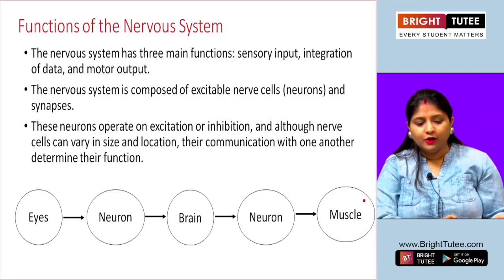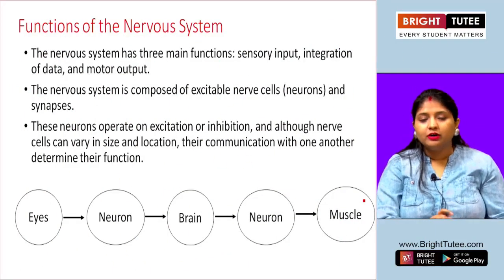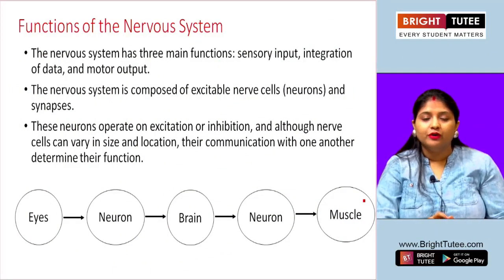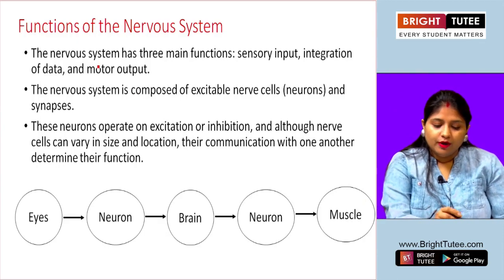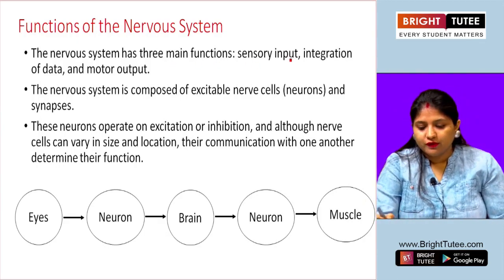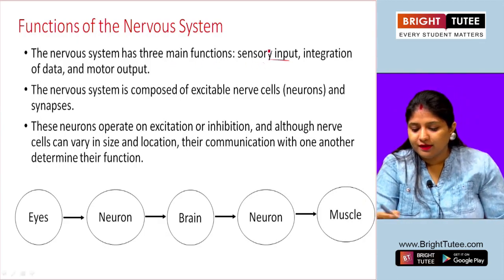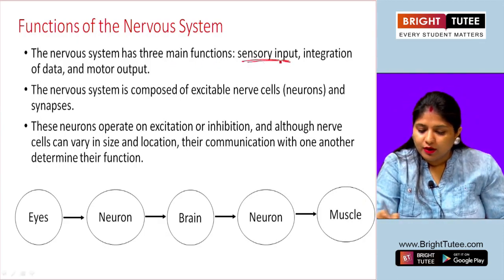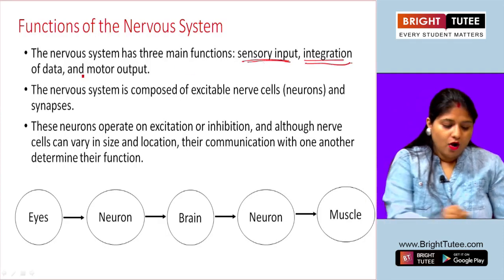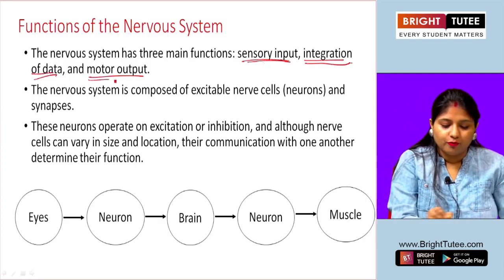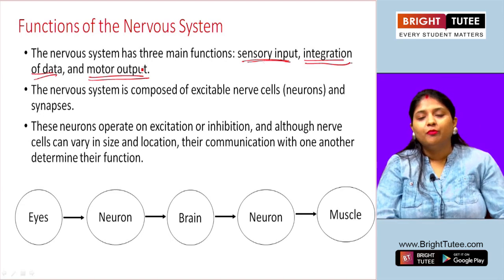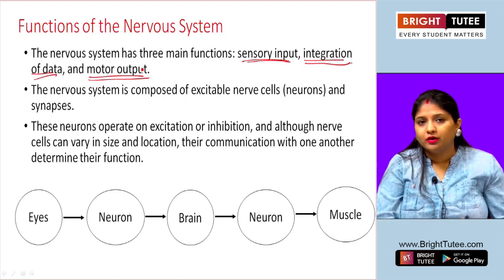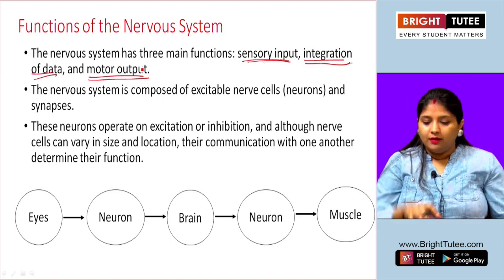Let's move ahead and talk about the functions of the nervous system. The nervous system has three main functions: first, sensory input; second, integration of data; and third, motor output. Understanding these three points is very important.